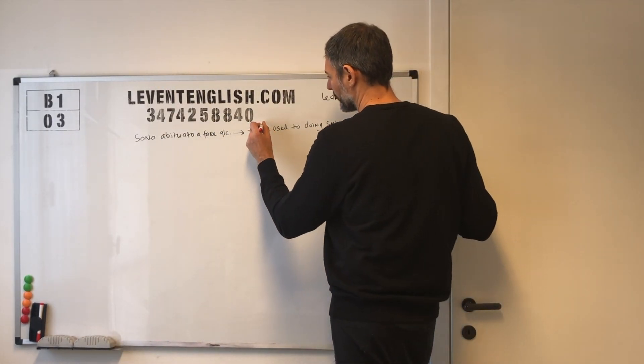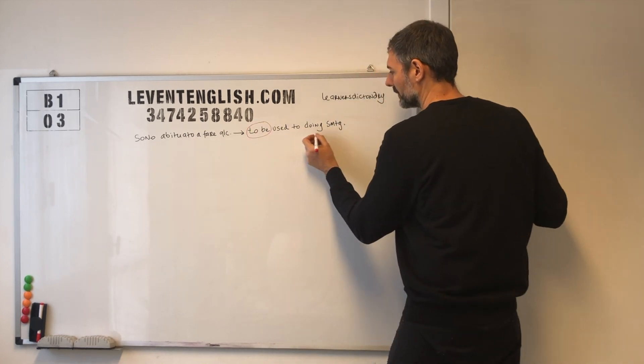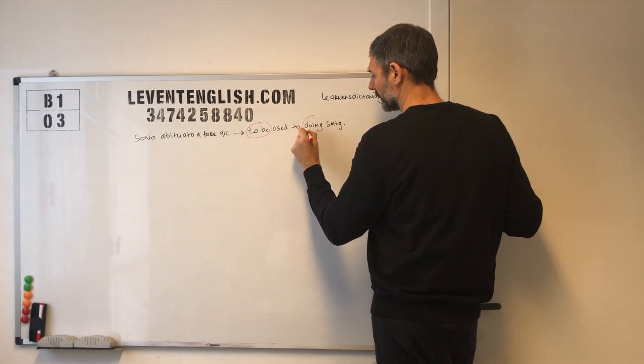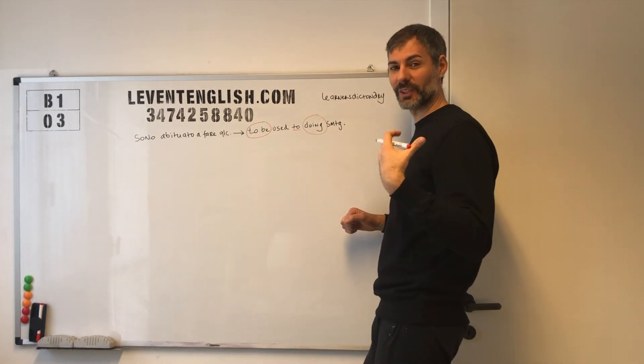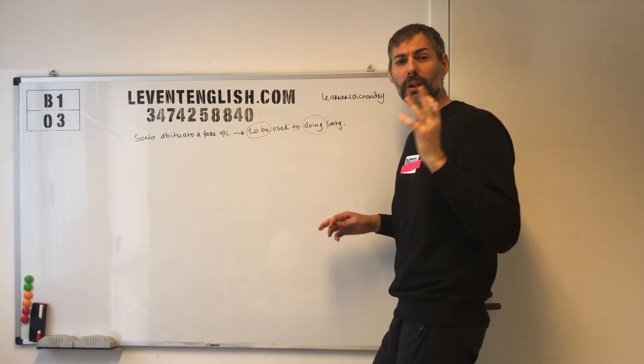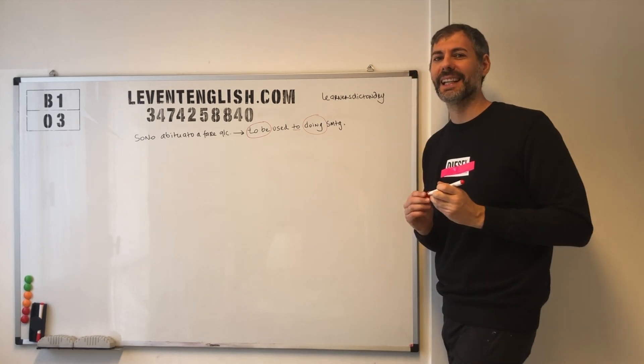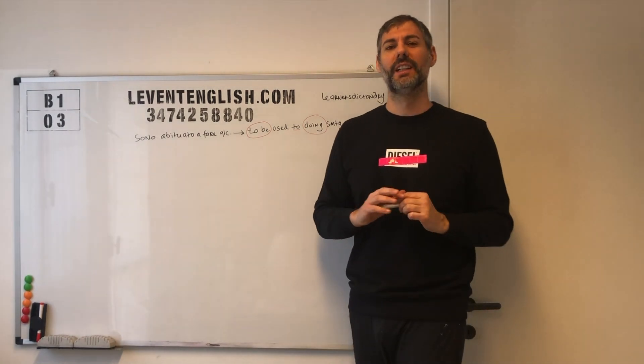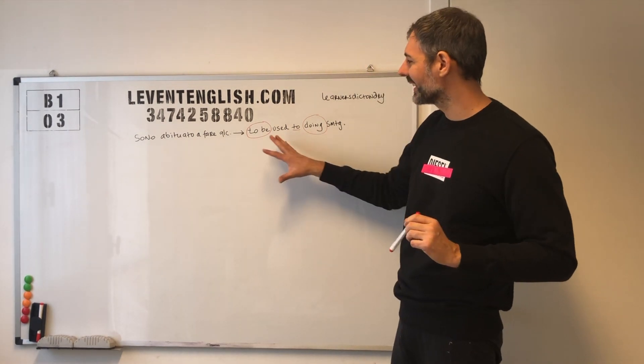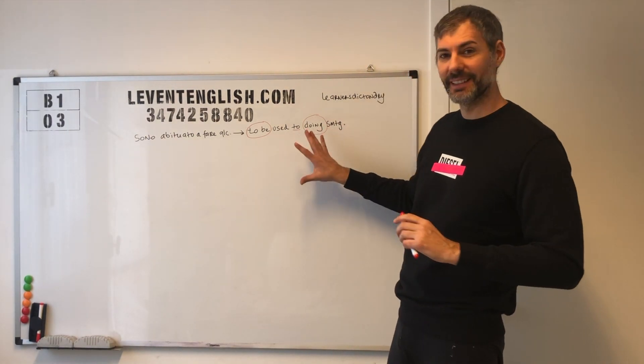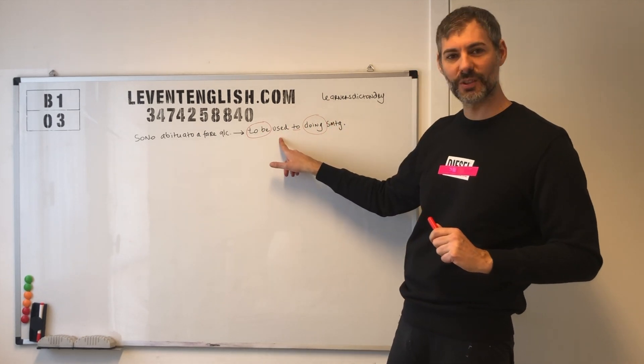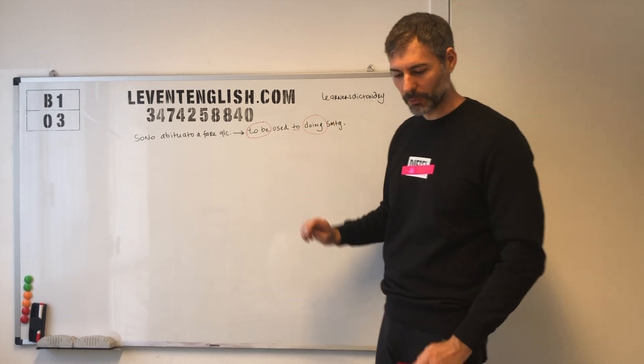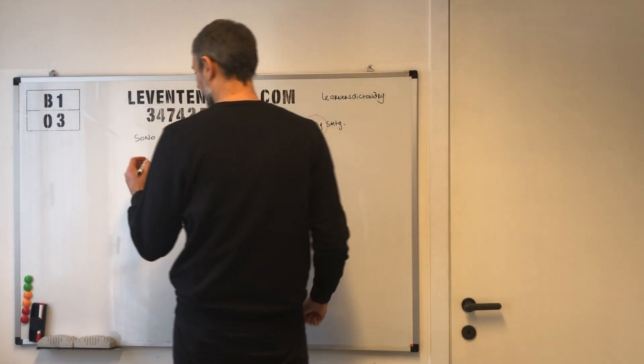Un'espressione un po' particolare. Adesso la vediamo coniugata in qualche esempio pratico. Le cose da tenere a mente sono più di una. Innanzitutto il fatto che prima di used questa volta c'è il verbo essere. E poi che dopo la preposizione to, questa volta abbiamo una forma ing. Cercate di tenere a mente questi due elementi che stanno a sinistra e a destra di used.